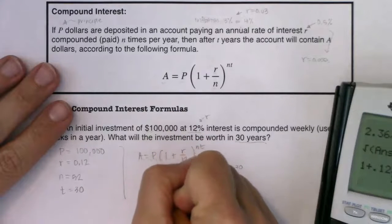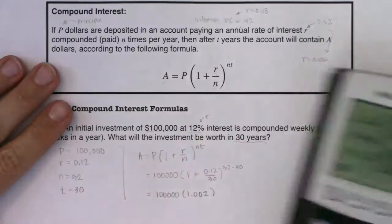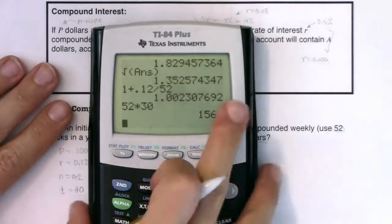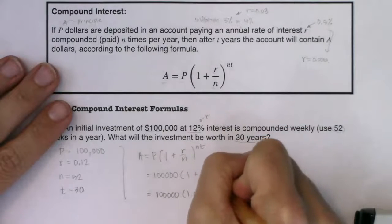So this is 100,000 times 1.002 and let's see what 52 times 30 is. We are looking at 1,560.